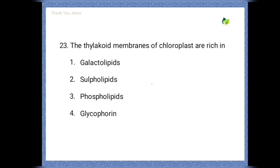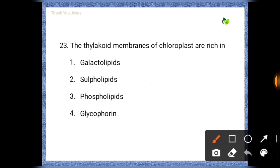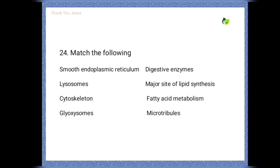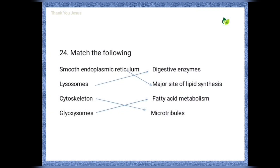Next question: The thylakoid membranes of chloroplasts are rich in — options are: galactolipids, sulfolipids, phospholipids, glycophorin. The correct options are the first, second and third — thylakoid membranes of chloroplasts consist of galactolipids, sulfolipids and phospholipids.